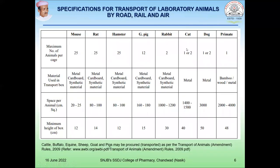A table gives the specifications for different species of animals while transporting by road, rail, and air. This includes the maximum number of animals per cage during transport, the material used in the transport box, space per animal, and minimum height of the box. For cattle, buffalo, sheep, goat, and pigs, the Transport of Animals Amendment Rule 2009 can be followed.